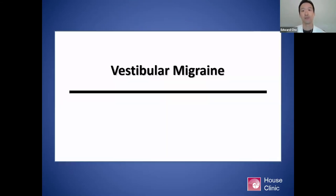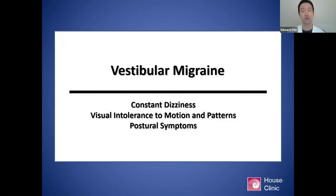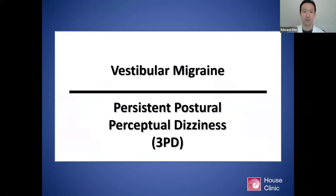This is a case of vestibular migraine where in between the episodic attacks there were some underlying symptoms — constant dizziness, visual intolerance to motion and patterns, postural symptoms. It doesn't even have to only be vestibular migraine — it could be a Meniere's patient or a BPPV patient where there are episodic attacks but some kind of constant underlay of symptoms. This underlay of symptoms is something called persistent postural perceptual dizziness, abbreviated 3PD.